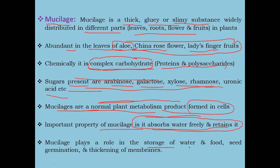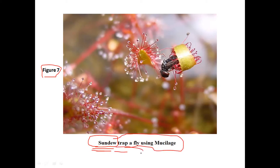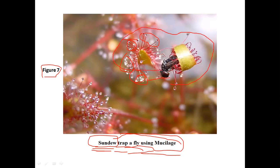Mucilage plays a role in the storage of water, food, seed germination, and thickening of membranes. In Figure 7, you can see the sundew plant, which contains mucilage. This mucilage can be used to trap different types of flies, which can be used as a food source by these plants. These drops are the mucilage — a sticky material. When a fly comes and attaches to it, the sundew traps the fly and uses it as food.